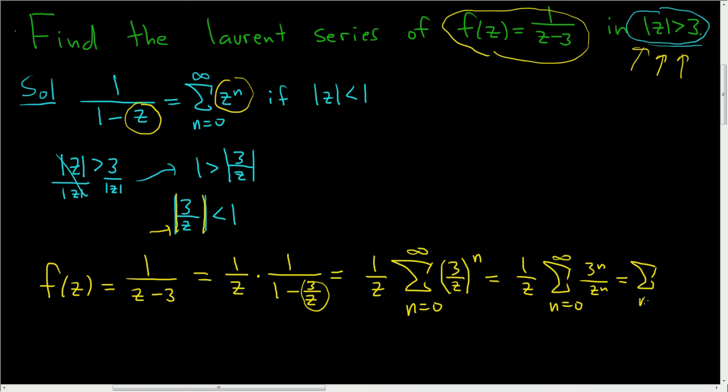Put it inside the sum, rather. So this is 3 to the n times 1 over z to the n plus 1. And that's it.